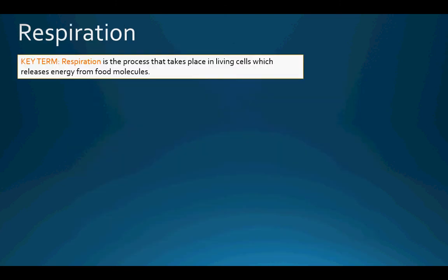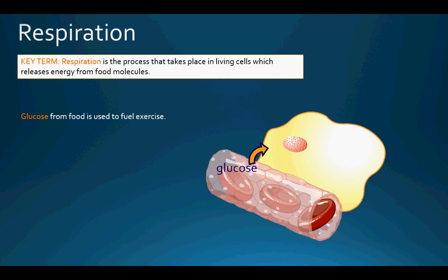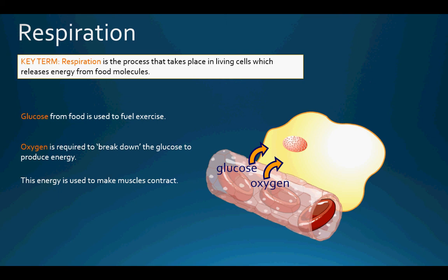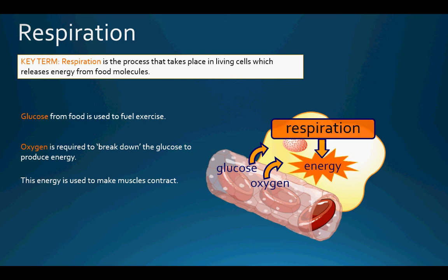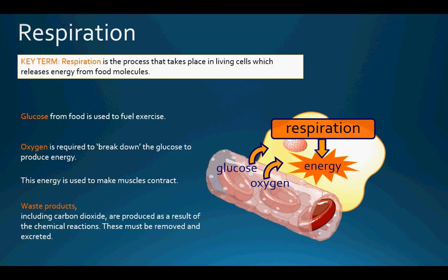Respiration is the process that takes place in living cells which helps to release energy from food molecules. Glucose from food is used to fuel exercise — we discussed glucose when covering the cardiovascular system. Oxygen is required to break down the glucose to produce energy, which is then used by the muscles to make them contract and work. This is called respiration. Waste products, including carbon dioxide, are produced as a result of these chemical reactions and must be removed and excreted by the body.